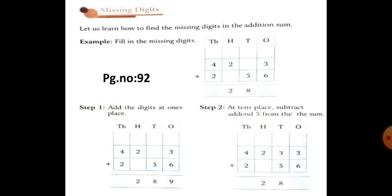Next, step 2. At tenth's place, subtract, addend 5 from the sum. So that is 8 and 5. So 8 minus 5, we get answer 3.